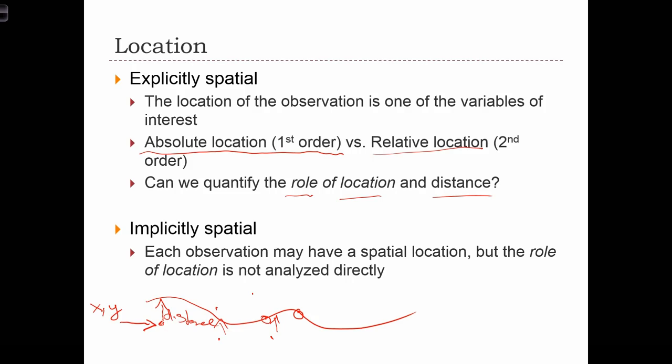So we might want to use statistics to understand what is the impact of location on the amount of times a waterfall gets visited. If we had absolute location data, we might study whether or not western waterfalls are visited more frequently than eastern waterfalls — we can use the x-coordinate to see if it has an impact on visitation. But we might also want to know whether highway infrastructure plays a role, in which case we would use the distance variable to know whether larger distances mean less visitation. In either case, we are storing explicit spatial information, but that information can be absolute or relative.